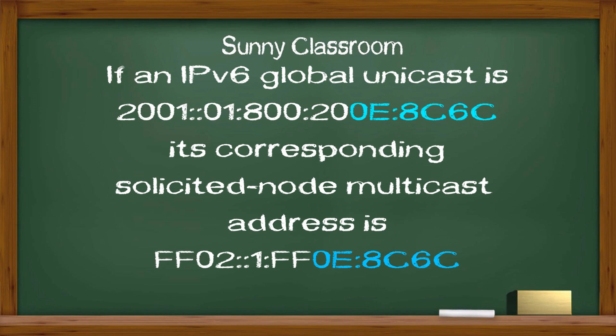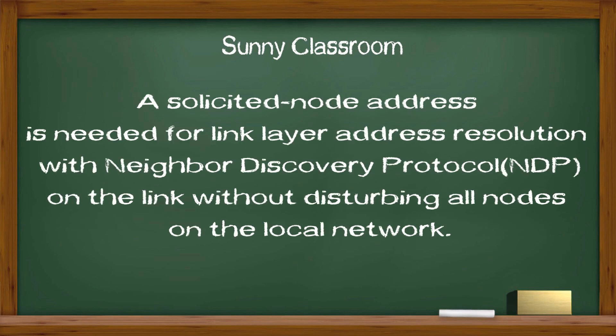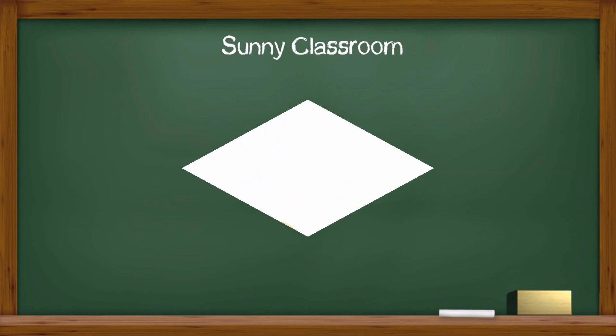A host is required to join a solicited-node multicast group for each of its configured unicast or anycast addresses. You may ask why a host needs a solicited-node address. It is useful and necessary for link-layer address resolution with the Neighbor Discovery Protocol on the link without disturbing all nodes on the local network. I will introduce the Neighbor Discovery Protocol in a separate video.